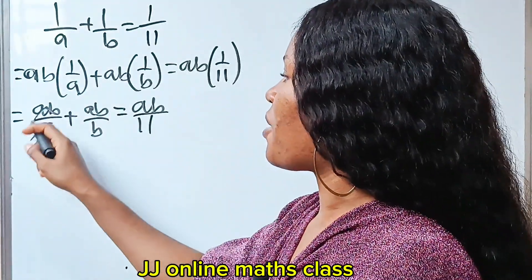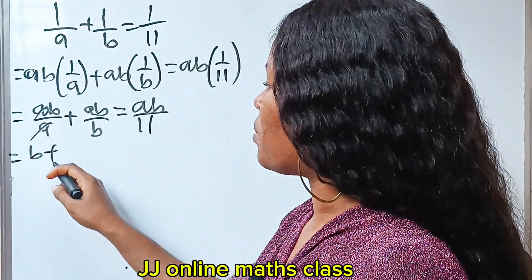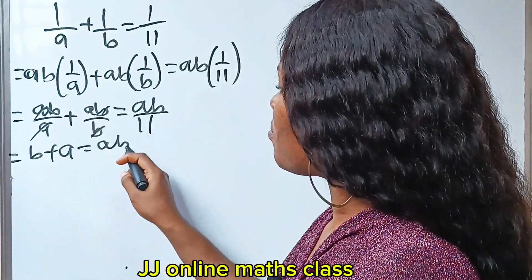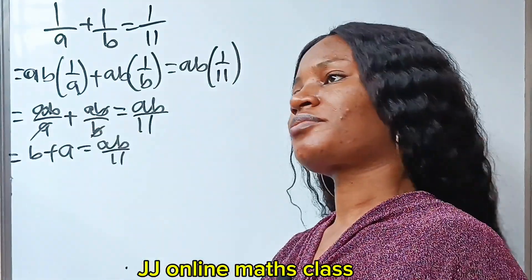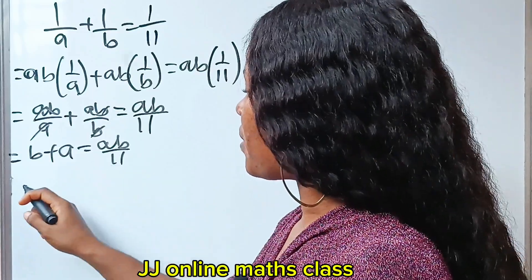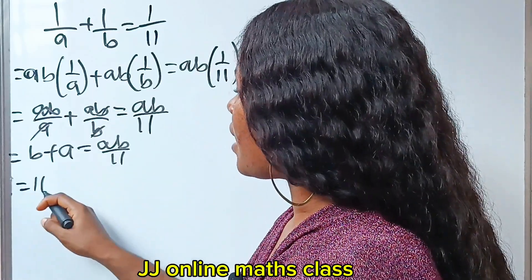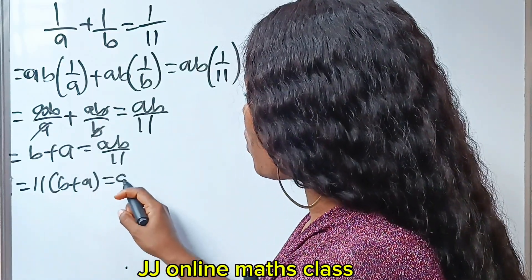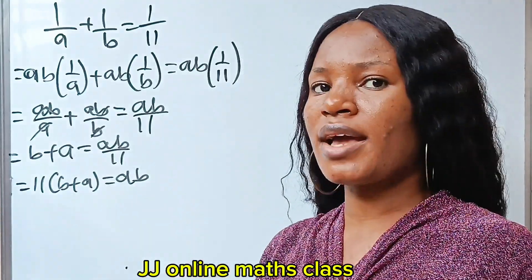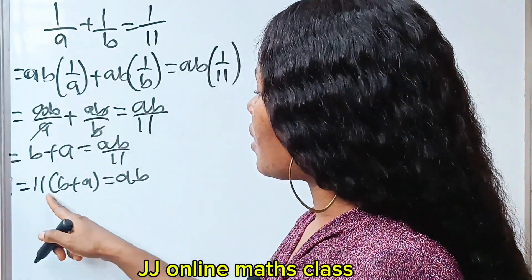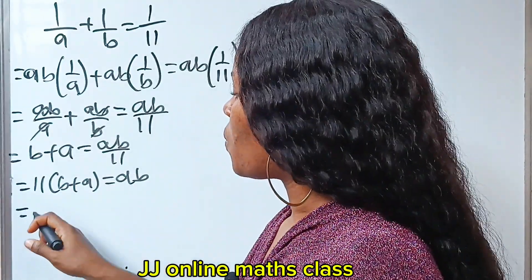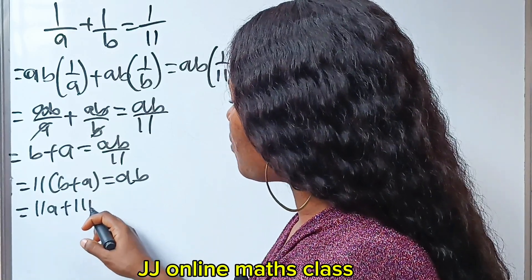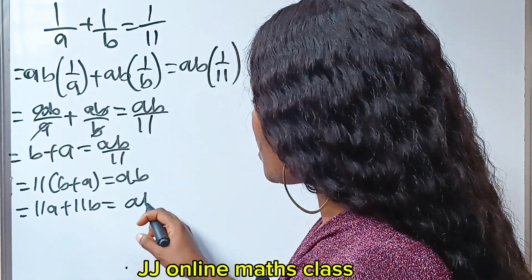So this is equal to AB over A plus AB over B is equal to AB over 11. Now, A will divide A, so we are left with B plus A is equal to AB over 11. If we cross multiply, we will have 11(B plus A) is equal to AB. Now let's open this bracket: 11A plus 11B is equal to AB.